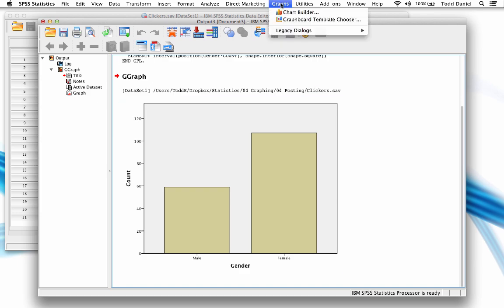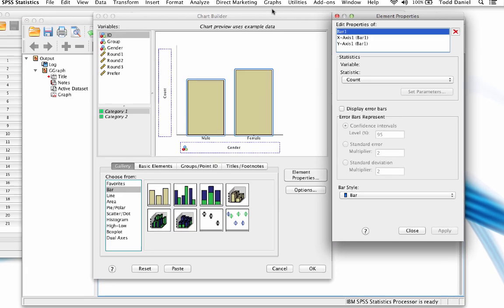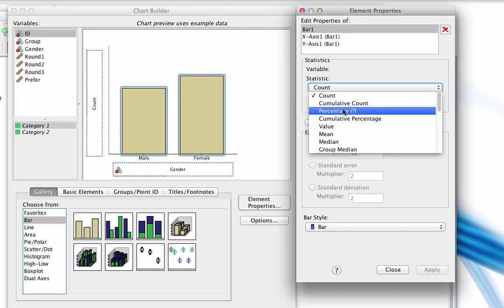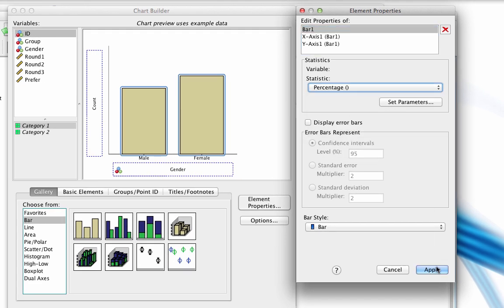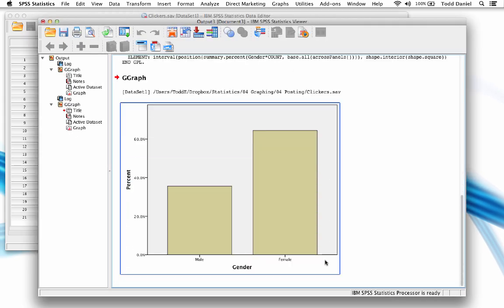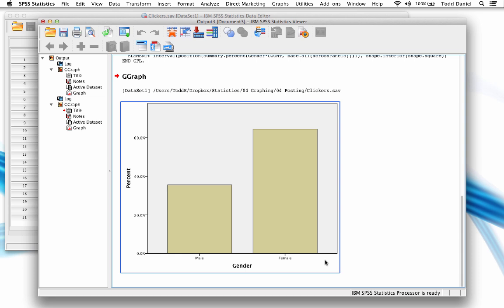So again, go to Graphs, Chart Builder, and now in Element Properties, change Statistic to Percentage. Apply, and OK. Better. Still not APA style, but we do have the percentages, so let's change a few things to get this looking as it should.